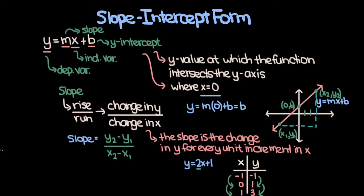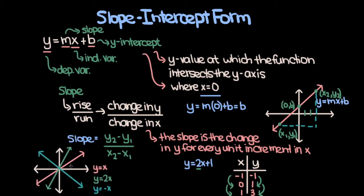Now the final thing I want to touch on is the significance of the sign and magnitude of the slope. Let's graph a couple of different lines. Here we have three lines: the pink line y equals x, the green line y equals 2x, and the cyan line y equals negative x. The slopes are 1, 2, and negative 1 respectively.